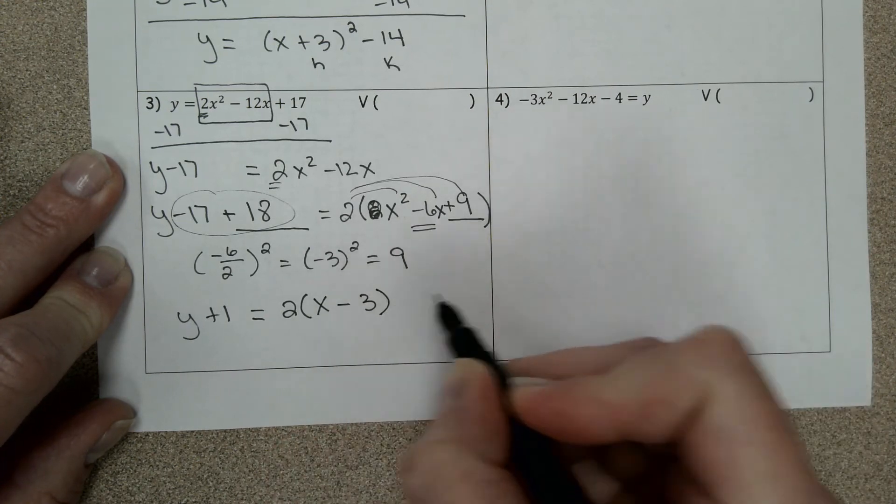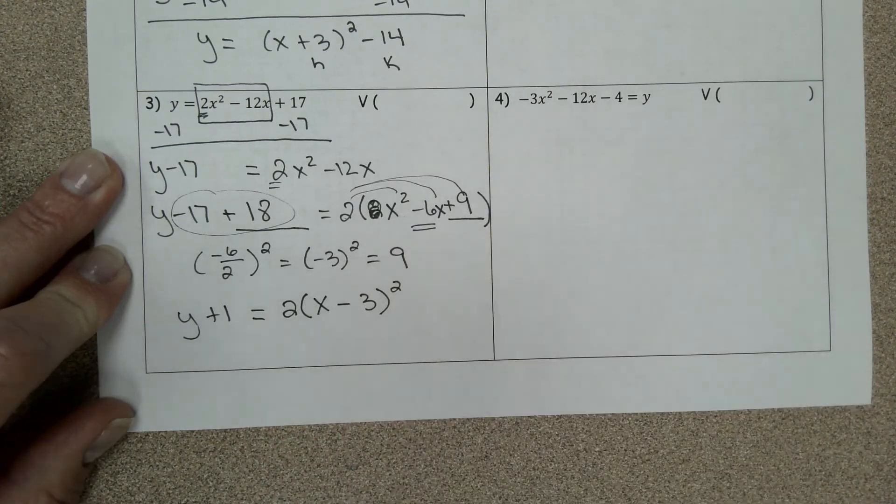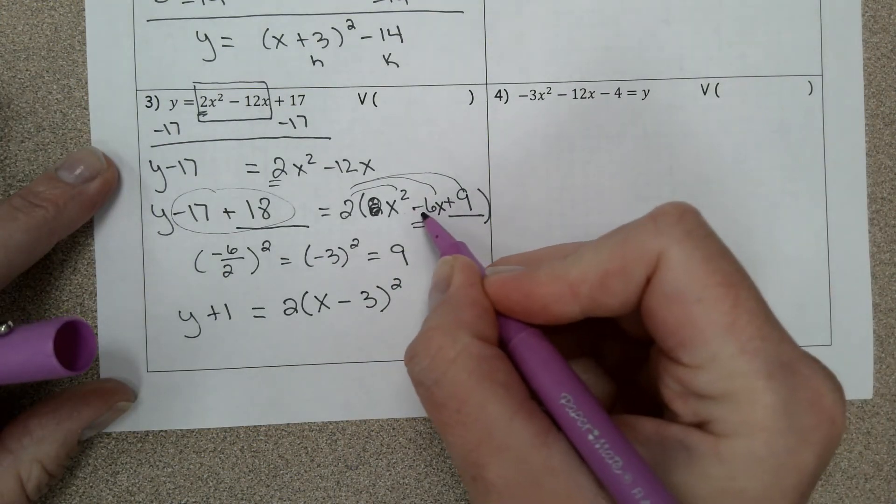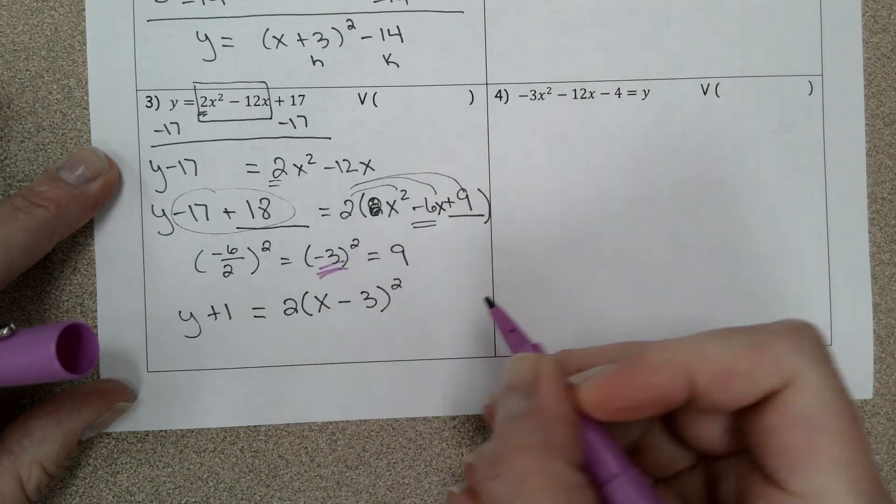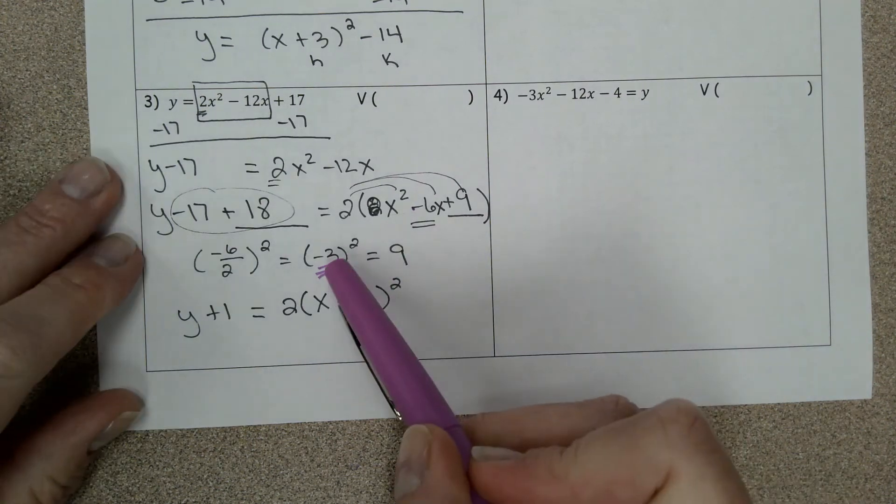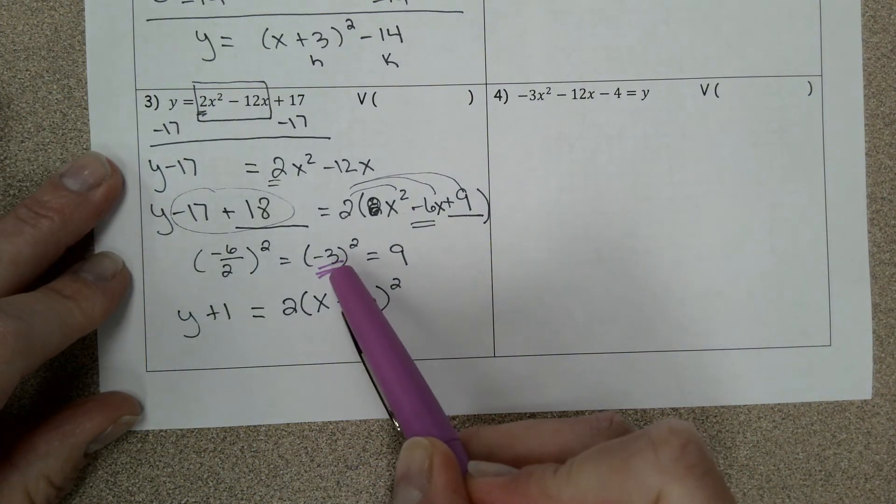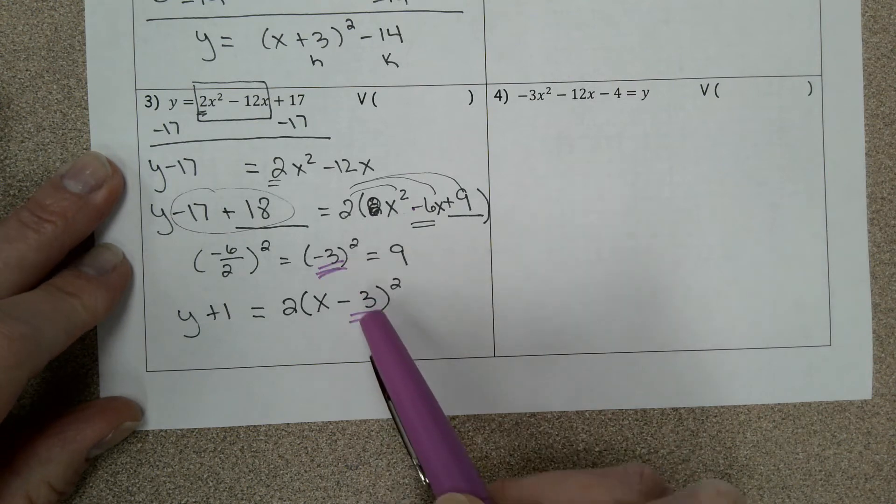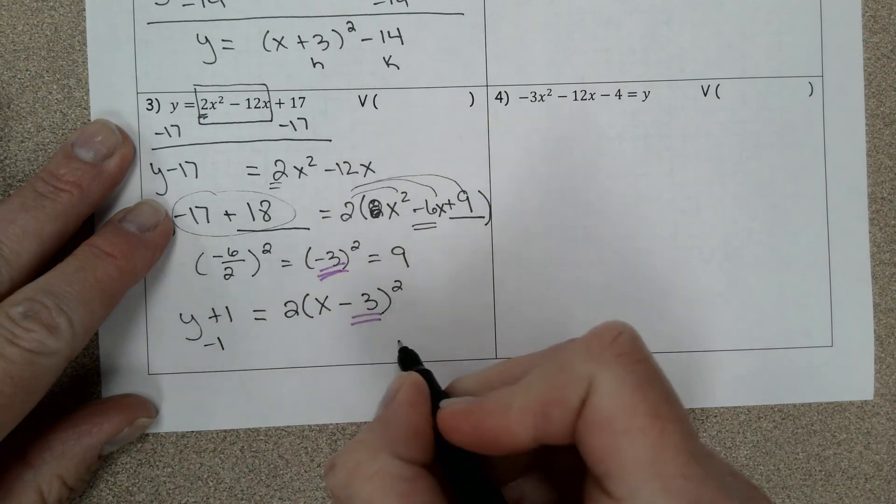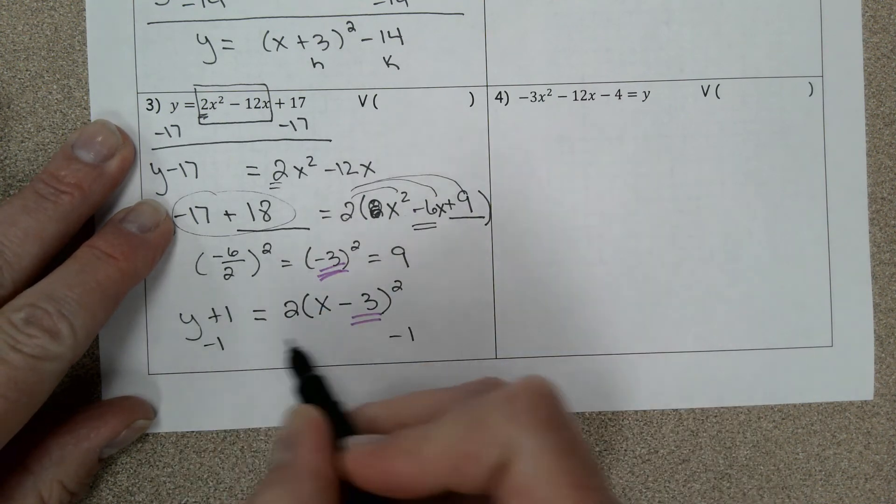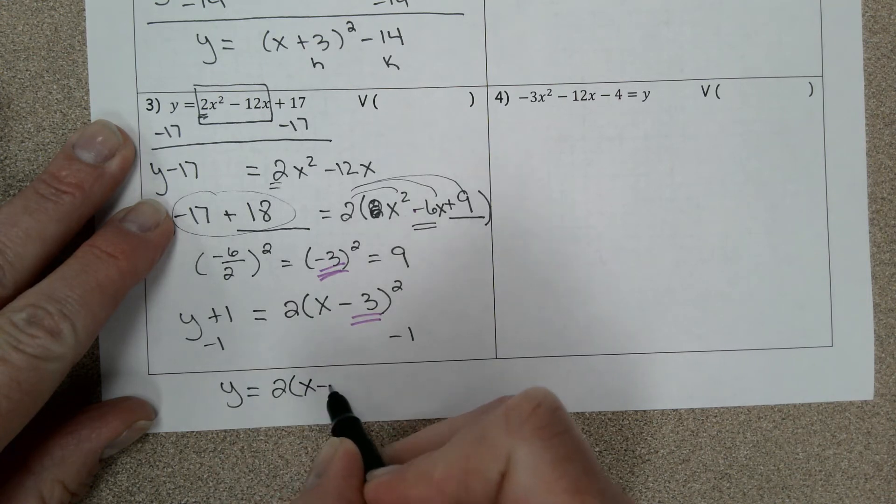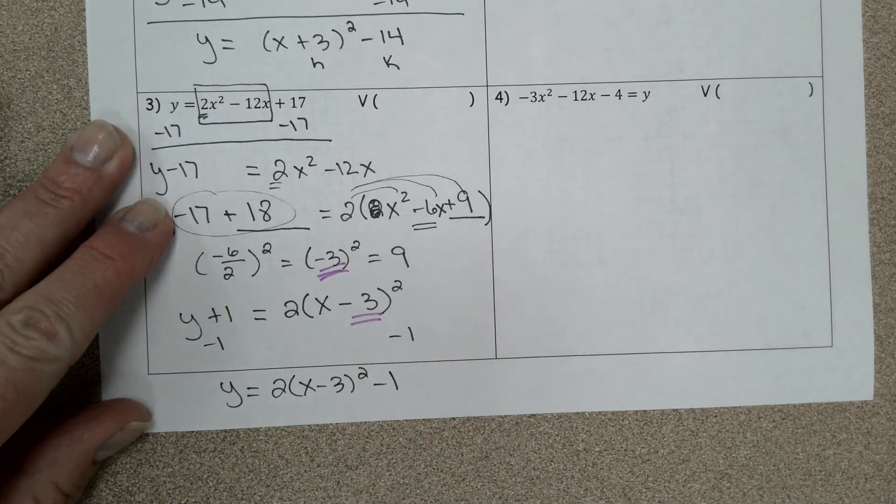This right side factors as x minus 3 squared. So if your middle term is a negative, it's going to continue there and it's going to keep showing up right there. So that's why I like showing me dividing it before you square it, because that number is always what goes in your parentheses. And then it says move the constant to the other side, so I have 2 times x minus 3 squared minus 1.